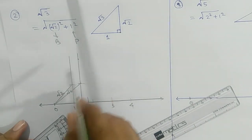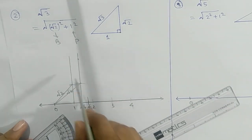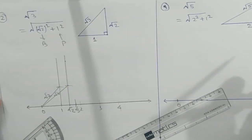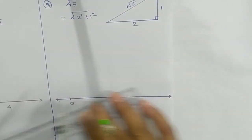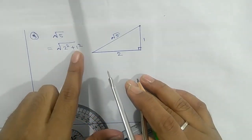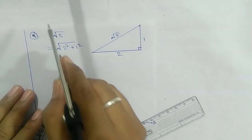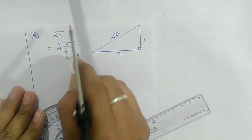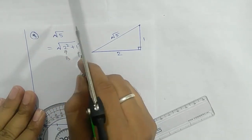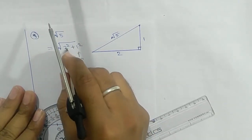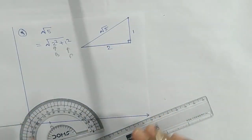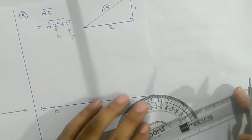If you need root 4, we know root 4 equals 2, so we will get it directly here. Now we proceed for root 5. Root 5 can be written as 2² + 1², meaning the base will be 2 units and the perpendicular will be 1 unit. You may exchange them, but we will take the bigger value as the base.